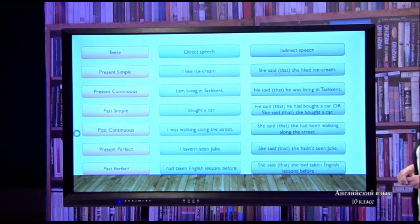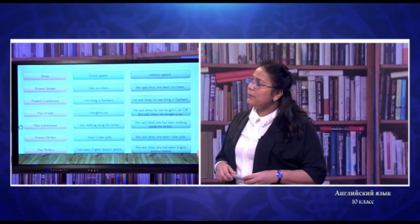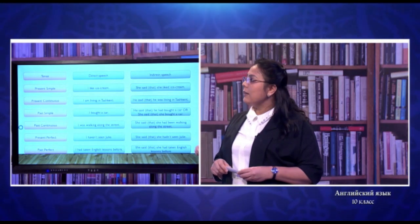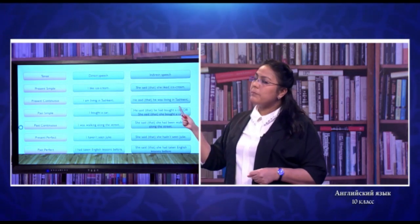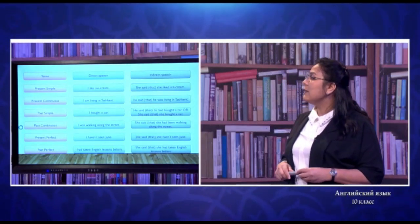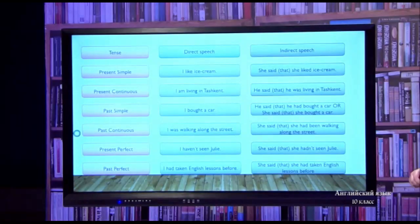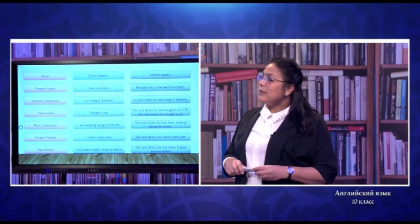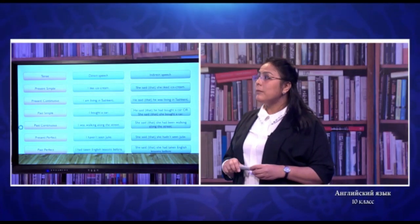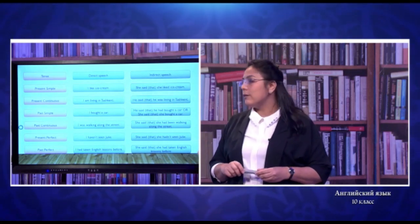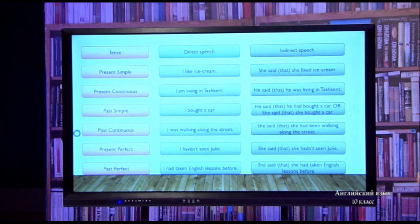Present simple: if we say 'I like ice cream' and we use the reporting verb in past form, we say 'She said she liked ice cream' — here we change both pronouns and the tense. Next, present continuous: 'I'm living in Tashkent' — the action is happening now. If we change that into reported past: 'He said he was living in Tashkent' — both pronoun and the verb are changed.